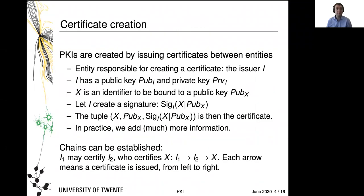How do we create certificates? Well, we do this by issuing certificates between entities that creates a PKI. We call the entity responsible for creating a certificate an issuer, or I. The issuer I has a public key, which we call pub_I, and a private key, which we call priv_I. X is an identifier that's going to be bound to a public key, pub_X. Now, let I create a signature, SIG_I, on X concatenated with pub_X. In practice you wouldn't probably use a concatenation operation such as that, but for simplicity we write it like this here. In that case, the tuple X, pub_X, and the signature SIG_I on X concatenated pub_X is our certificate. In practice, we're going to add much more information, but that is really the essence.